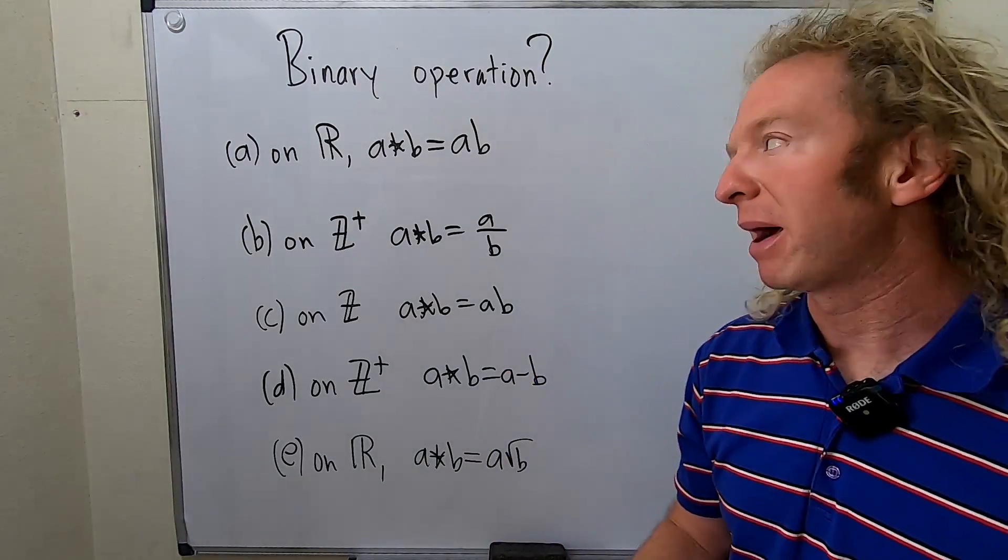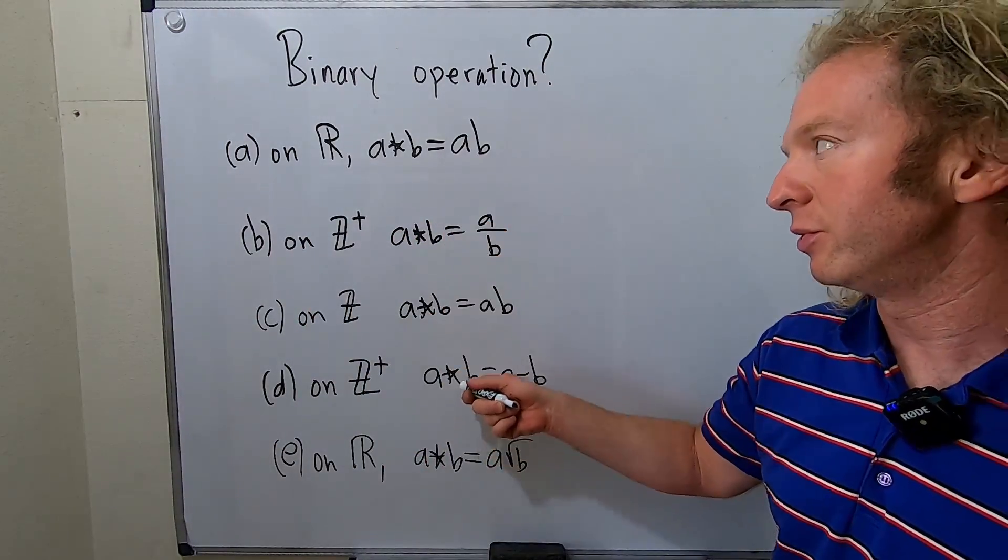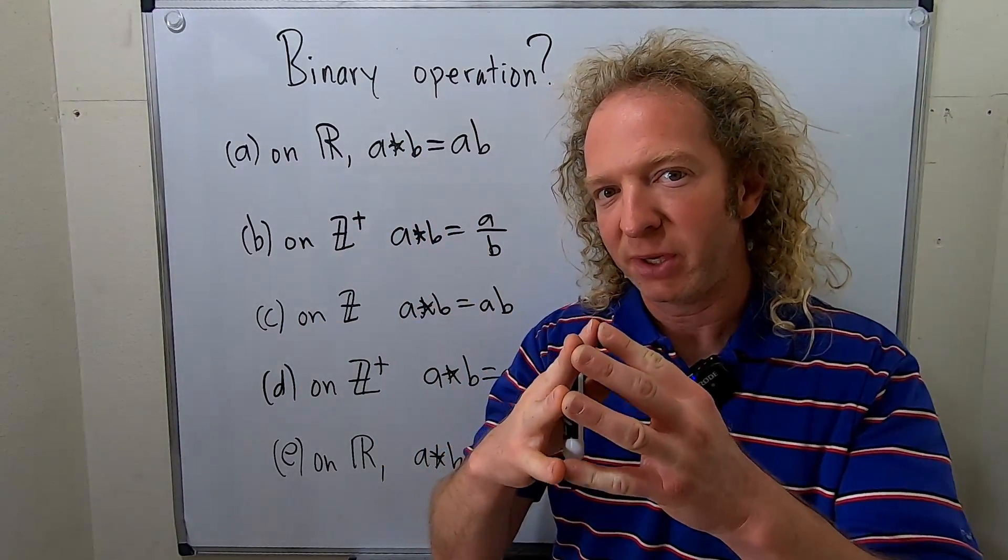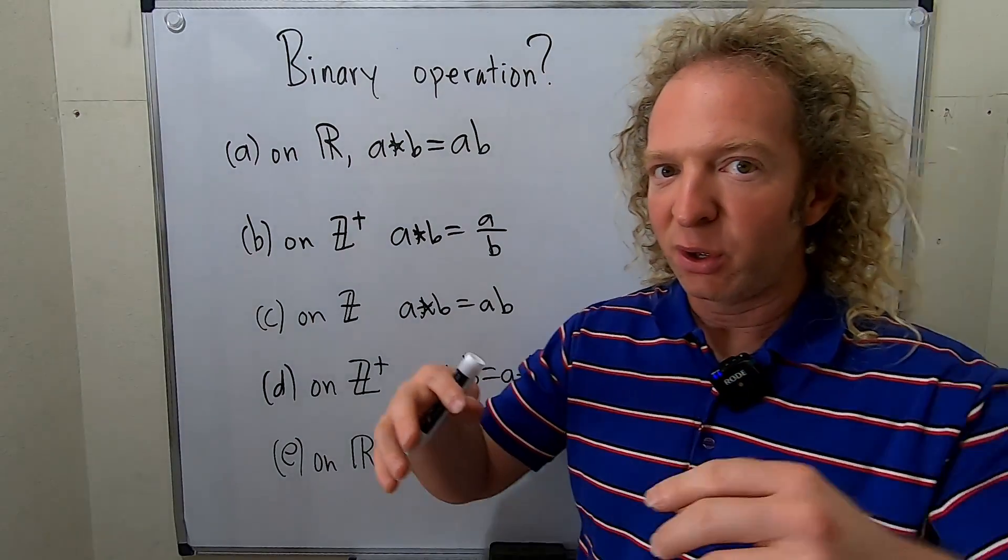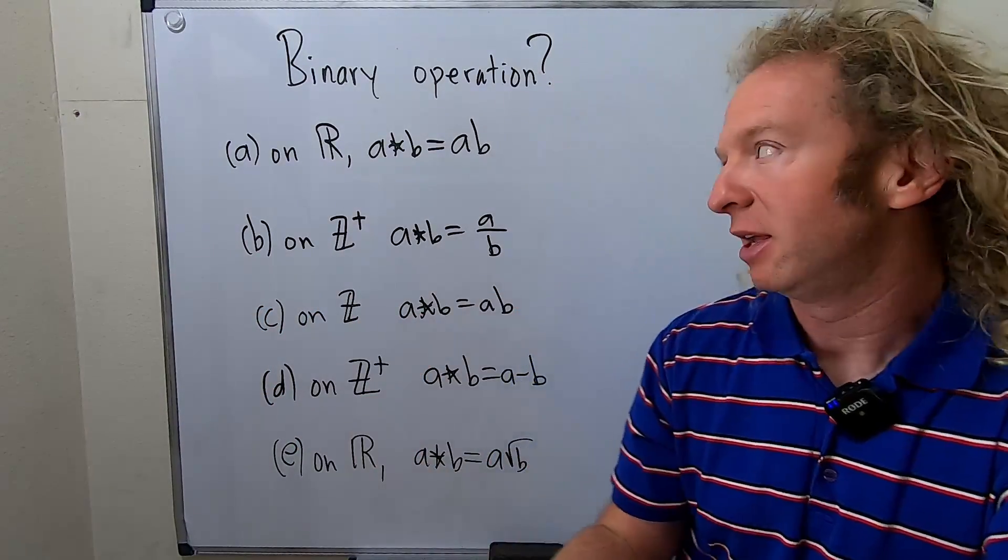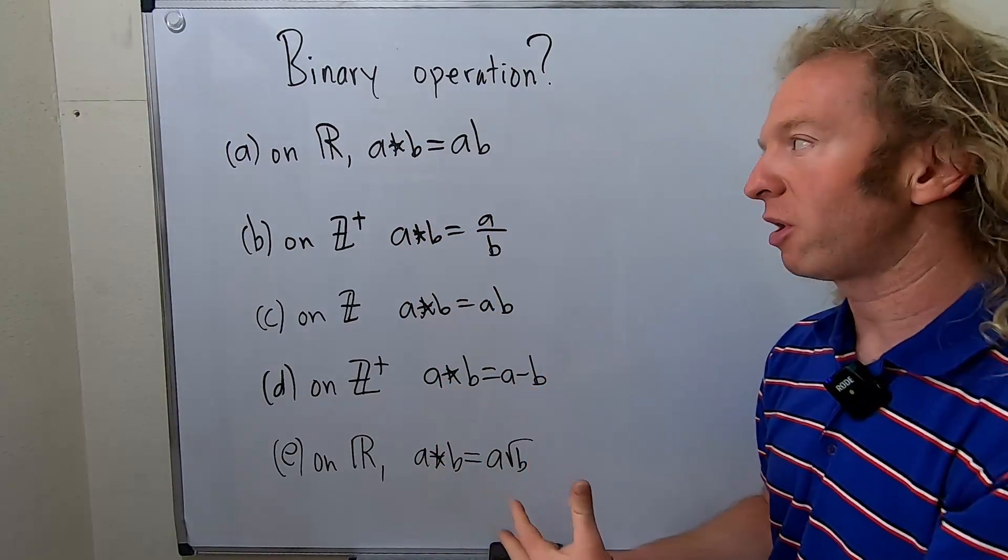Hi everyone, in this video we're going to talk about binary operations. So we have several examples that we're going to do. A binary operation is an operation on a set such that given two elements in the set, when you apply the operation, you get an element in the set. So in each example here, the operation has the name star.